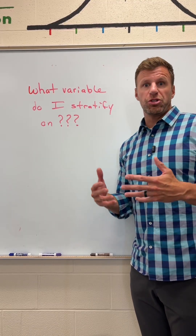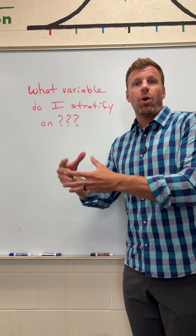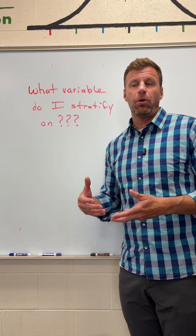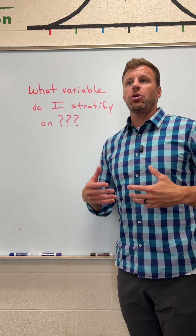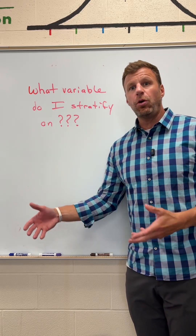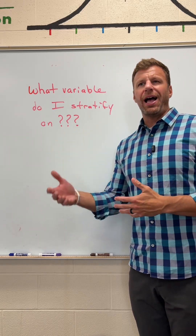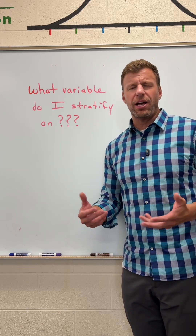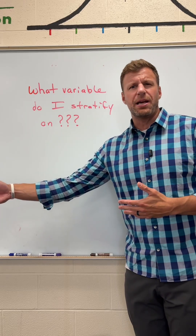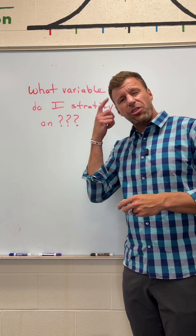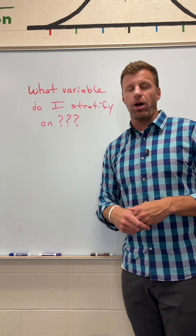The other important thing to think about when you're stratifying is: what variable do I stratify on? You want to make sure you're choosing a variable that matters to what it is you're asking. In the previous example, it made sense that older kids are going to be taller and freshmen are going to be shorter, so it made sense to get some kids from every single grade level because that variable matters when measuring height. If I'm measuring height, I wouldn't stratify by hair color — choosing some kids with brown hair, blonde hair, black hair, red hair — because hair color doesn't matter to what it is I'm measuring. Always make sure you're thinking about what variables matter to what it is you're measuring, and those are the variables you want to stratify on.